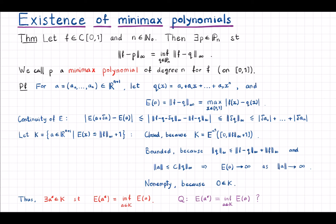We are in a polynomial space of degree n, which means that the dimension of the space is n plus one. Let's look at the coefficients of that polynomial as a point in n plus one dimensional space.